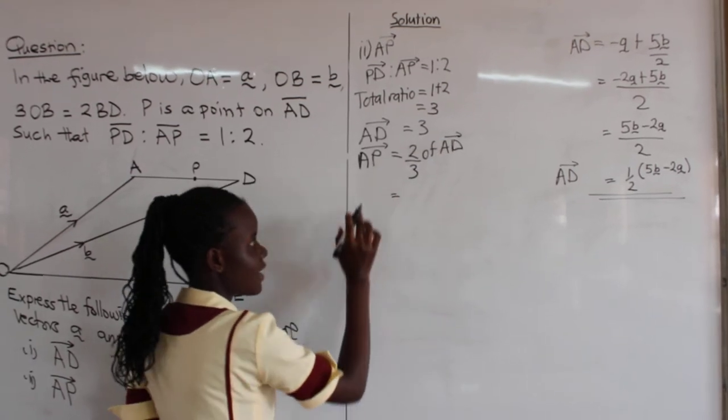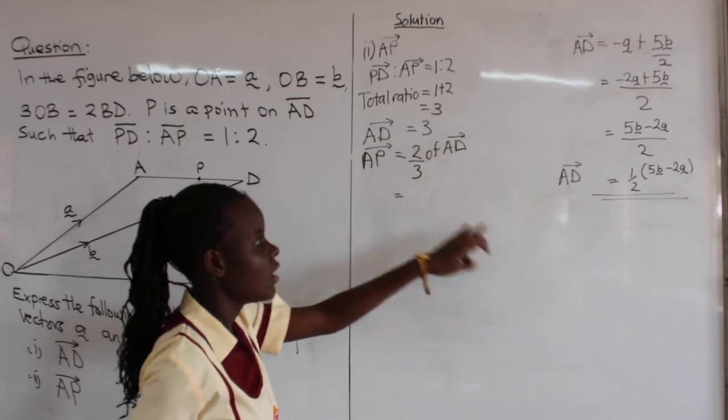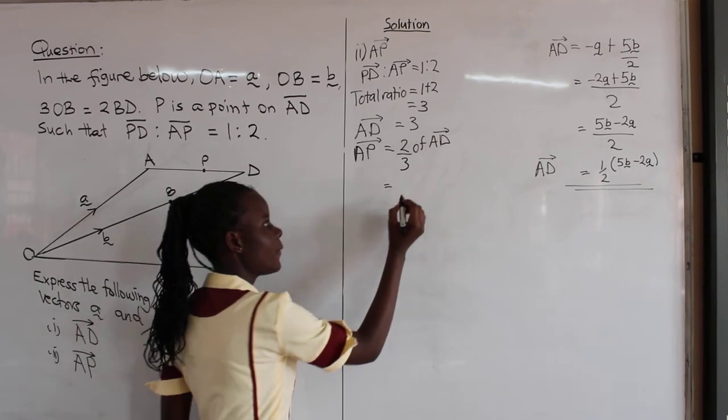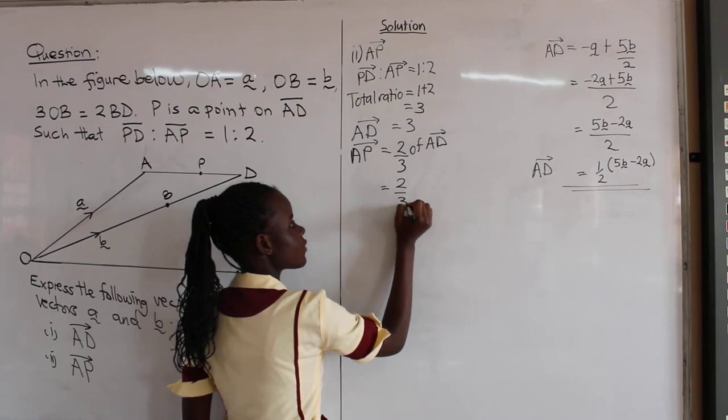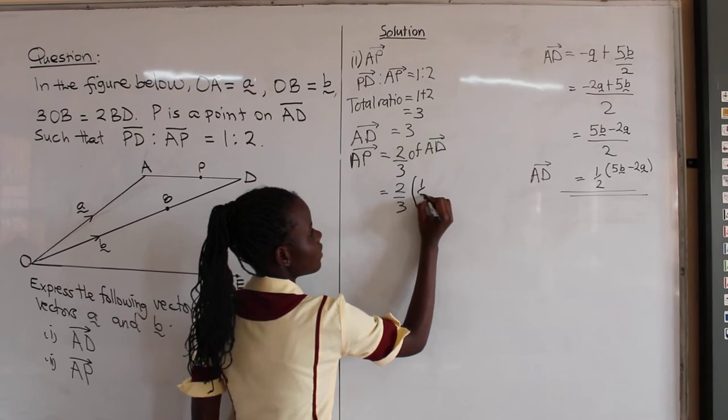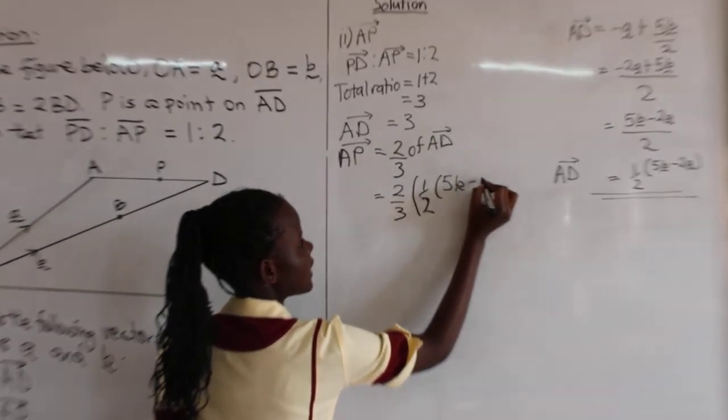So to get the value of AP we have to substitute AD into this. And remember our AD here we got it as this. So we shall say 2 out of 3 into a half into 5B minus 2A.